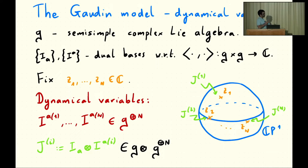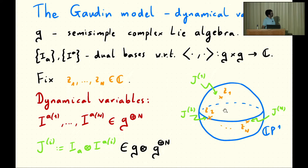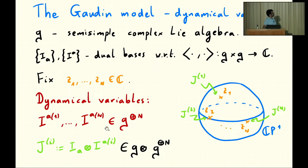Let me start by recalling what the Gaudin model is. The data is a finite dimensional semi-simple Lie algebra over the complex numbers. Fix some non-degenerate symmetric bilinear form on the Lie algebra, and pick some dual bases with respect to this bilinear form — convenient for describing the Lax matrix. You also fix a set of marked points Z1 up to ZN on the complex plane. The dynamical variables are essentially copies of the Lie algebra attached to these marked points, with basis elements I_a carrying an extra label 1 to N indicating the marked point.